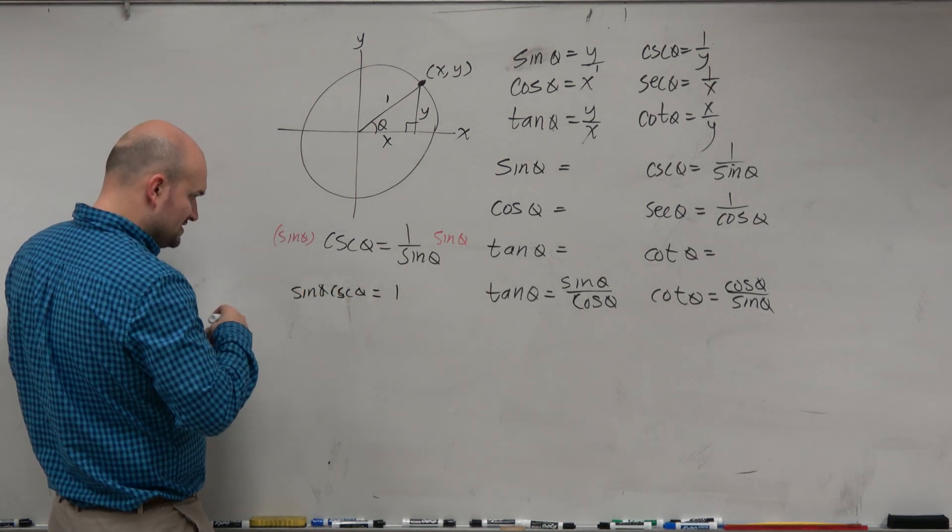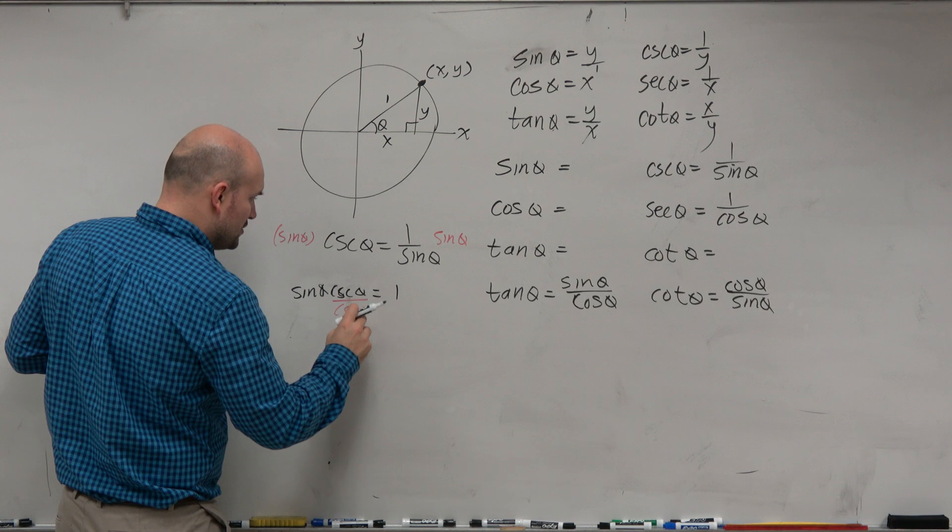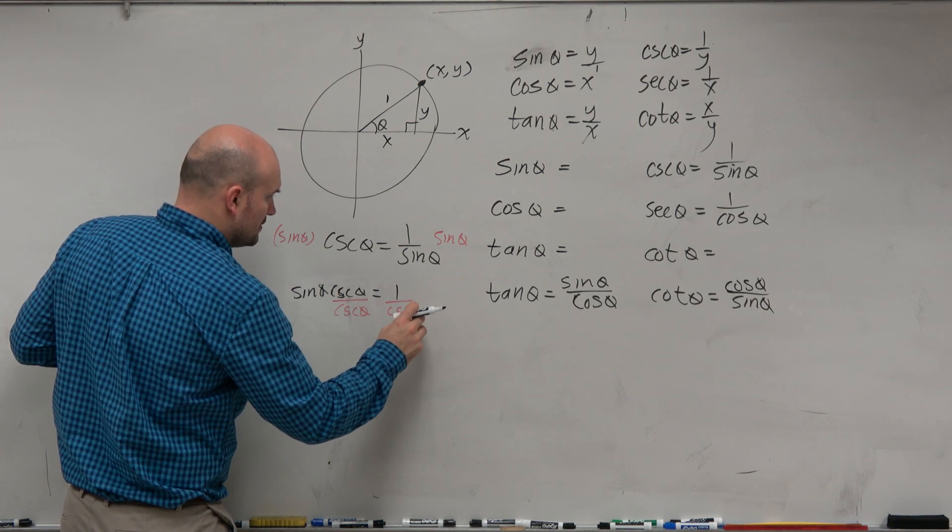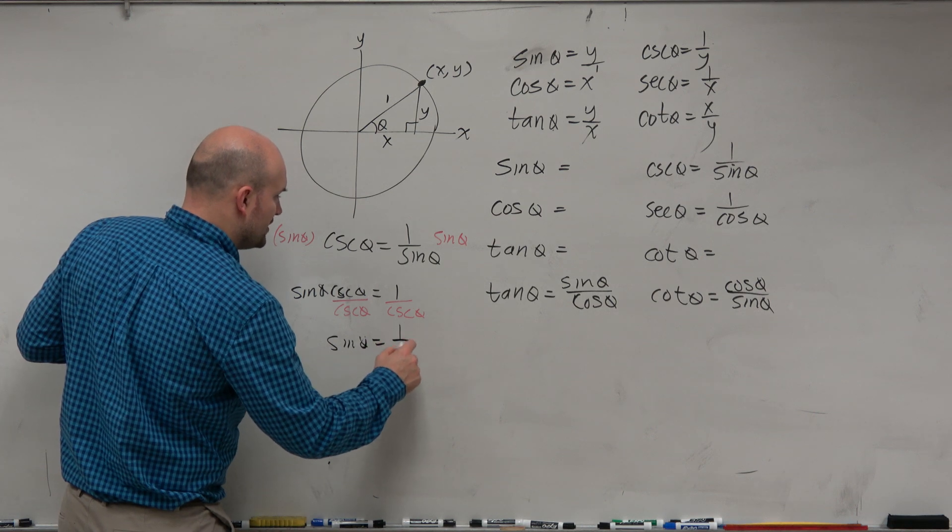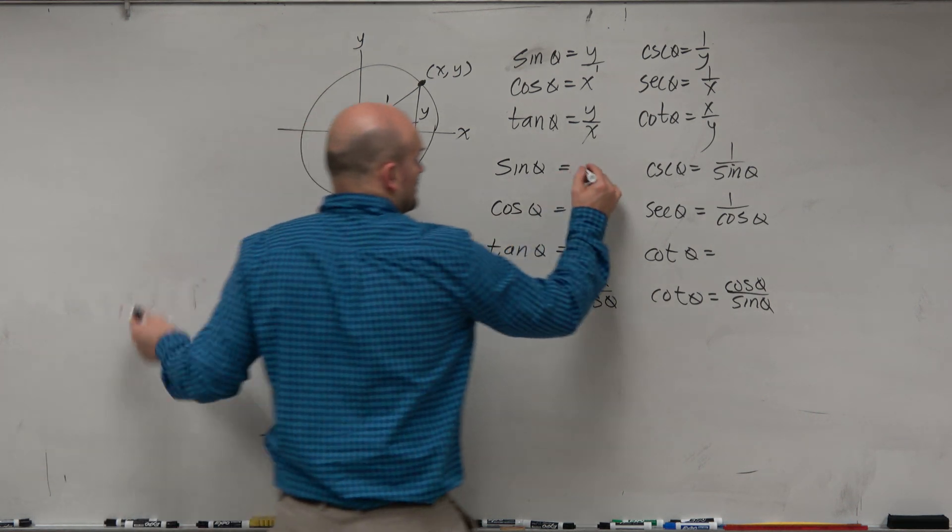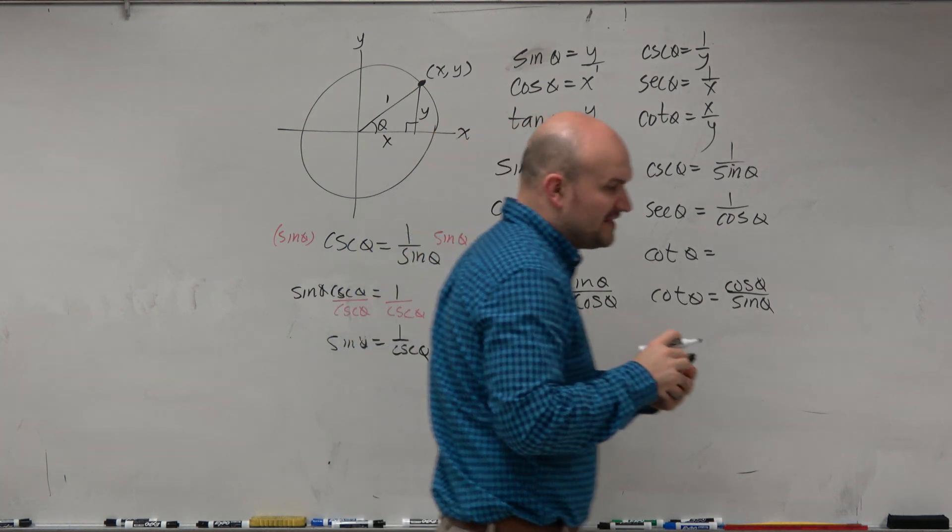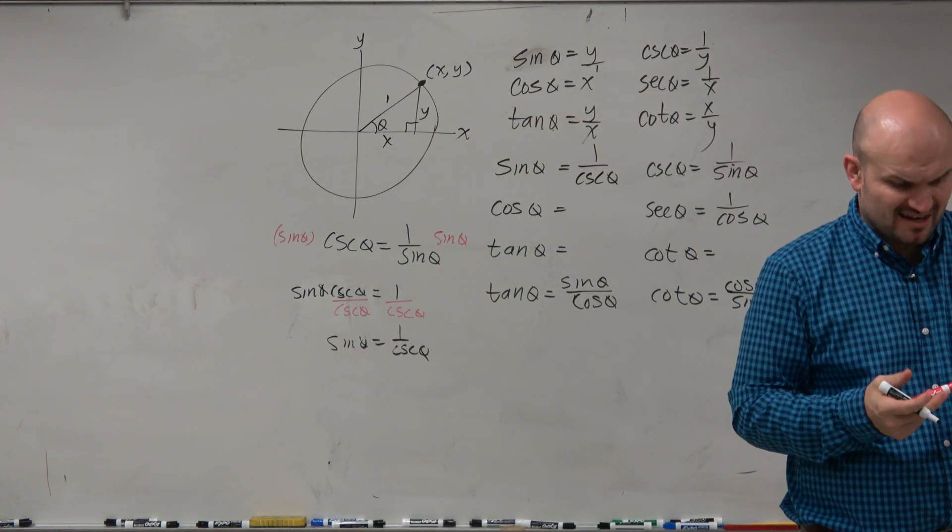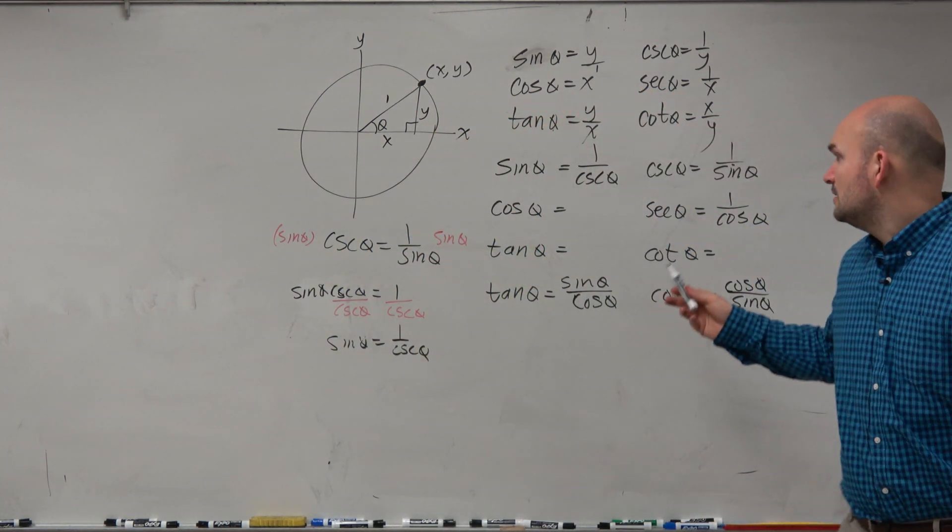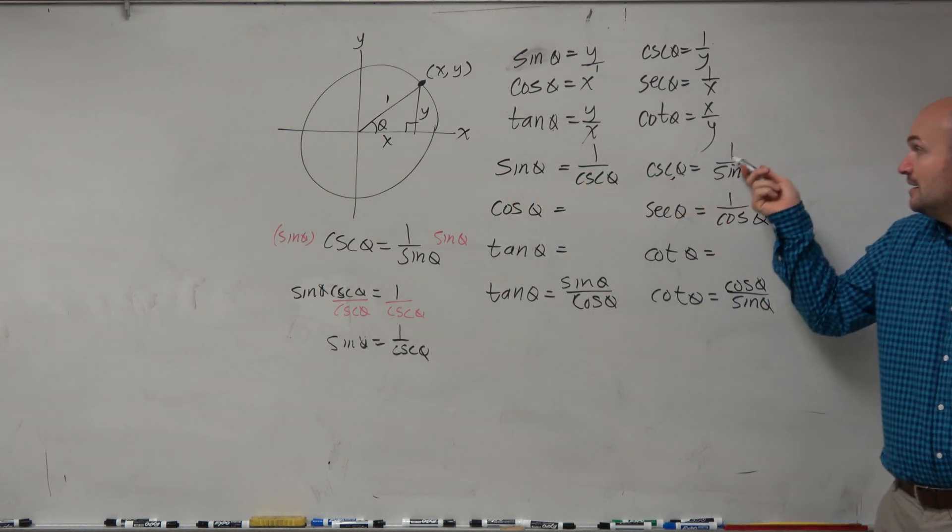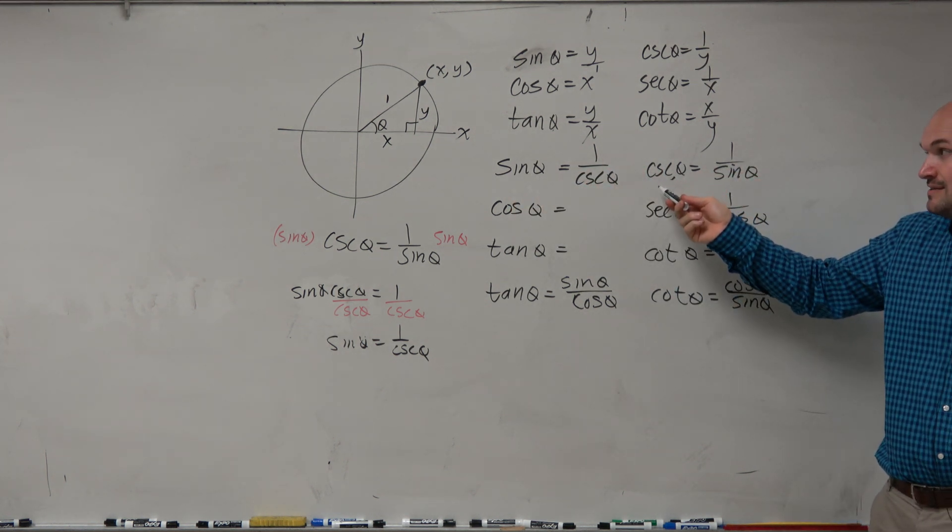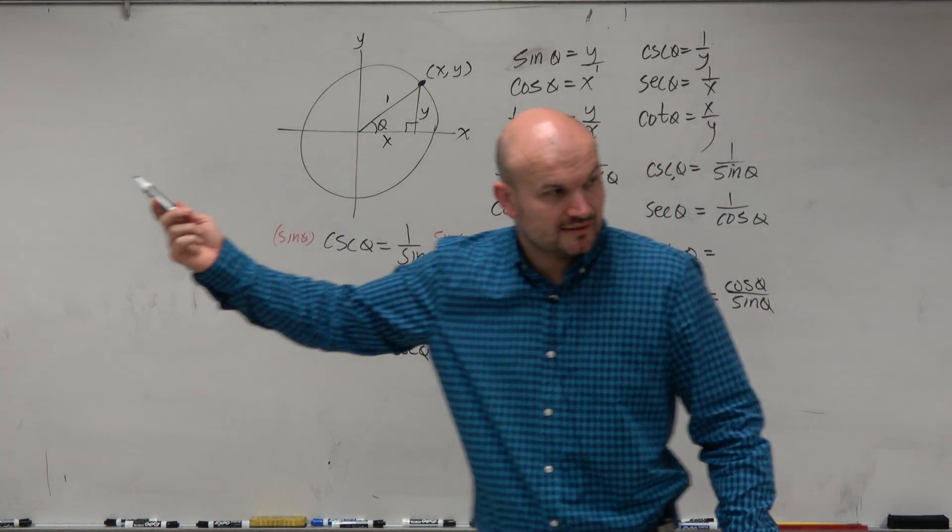And if I said solve for sine, now you'd divide by cosecant of theta. So therefore, sine of theta equals 1 over cosecant of theta. And in terms of that reciprocal relationship, does that kind of make a little bit of sense? If cosecant and sine are reciprocals of one another and 1 over sine is equal to cosecant, then 1 over cosecant should equal sine. Yes?